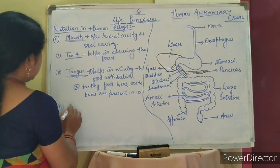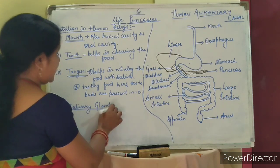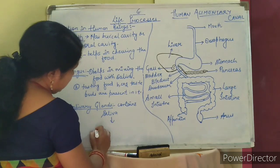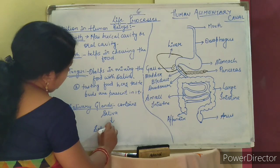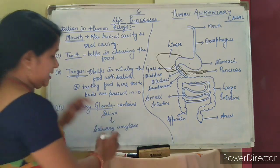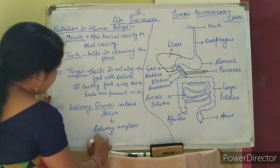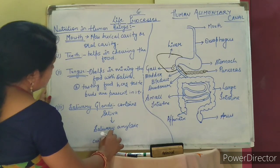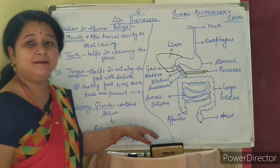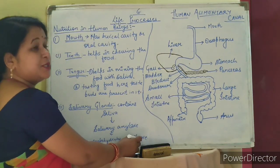The third part is salivary glands. Salivary glands contain saliva, which is secreted by an enzyme called salivary amylase. What is the function of salivary amylase? It helps in digestion — it helps in the breakdown of carbohydrates into glucose.